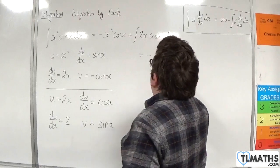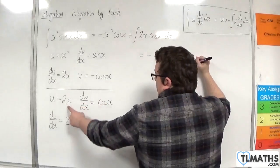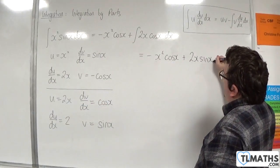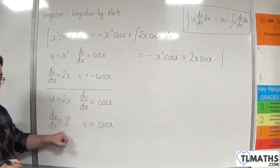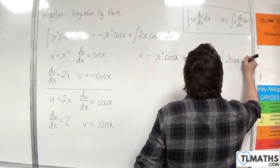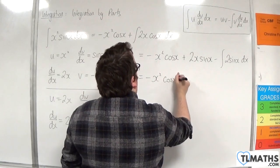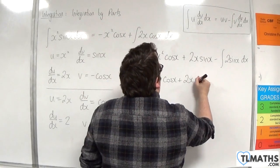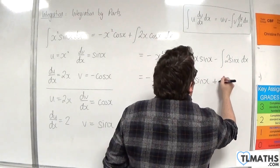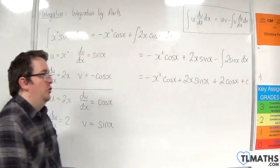So we have minus x squared cosine x, then plus u times v, which is 2x sine x, take away the integral of v times du by dx, which is 2 sine x. So we have minus x squared cosine x plus 2x sine x, and then minus 2 sine x integrates to plus 2 cosine x, plus the constant of integration C.